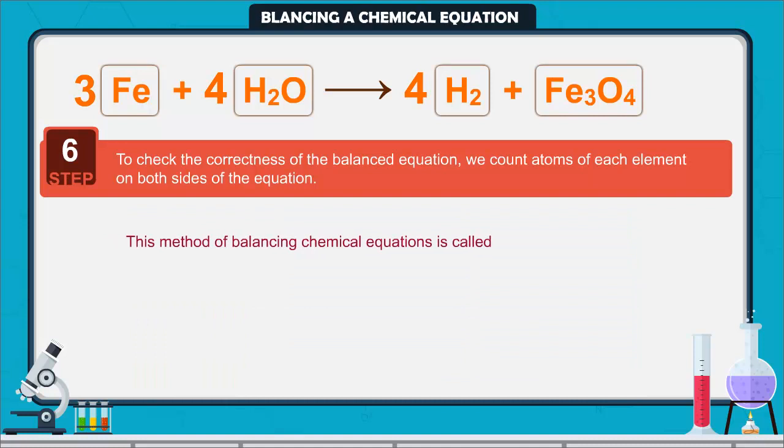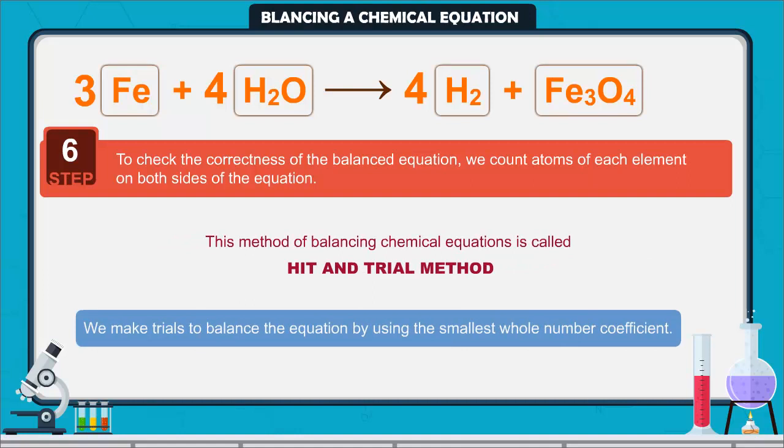This method of balancing chemical equations is called hit and trial method as we make trials to balance the equation by using the smallest whole number coefficient.